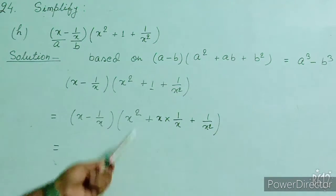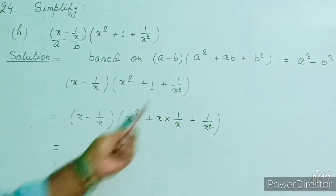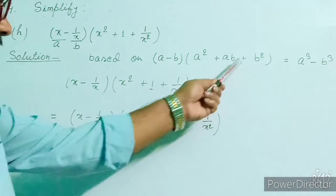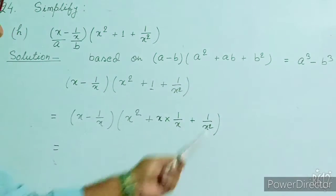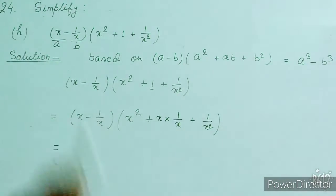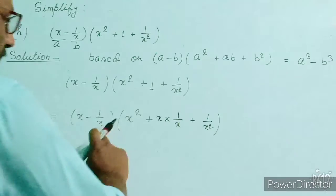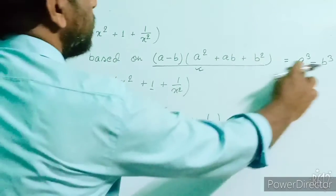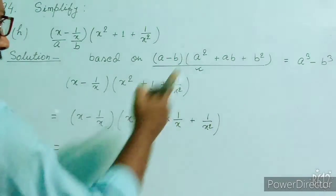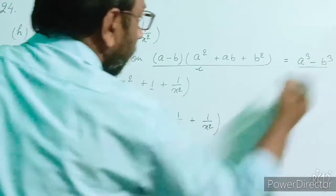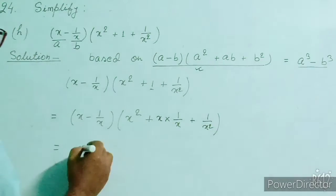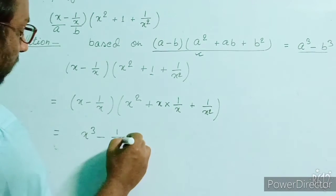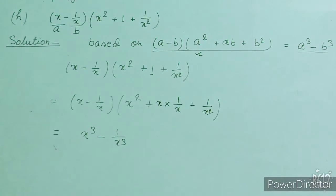We close the bracket. Now this expression is in the form of (a minus b)(a squared plus ab plus b squared), where a is x and b is 1/x. This expression is equal to a cubed minus b cubed. So a cubed is x cubed, and minus b cubed is minus 1/x cubed.